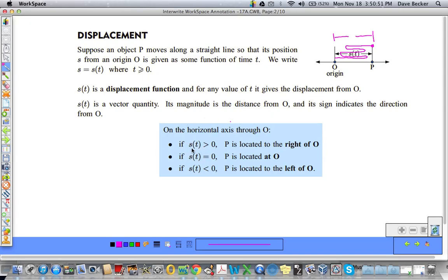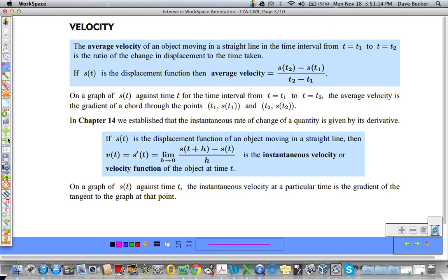We use lowercase s of t to represent the displacement function for any value of t where t is time. Its magnitude is the distance from zero and its sign indicates the direction from zero. For example, if the displacement function is greater than zero, it's located to the right of the origin. If it's equal to zero, it's at the origin. And if it's negative or less than zero, it is to the left of the origin. The displacement function is also known, and I use these interchangeably, as the position function.